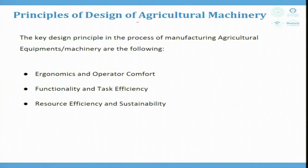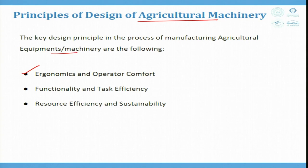The principles of design of agriculture machinery include: number one, ergonomics and operator comfort; number two, functionality and task efficiency; and number three, resource efficiency and sustainability. Design in agriculture machinery is not as stringent as in medical devices, but there are still regulatory requirements.